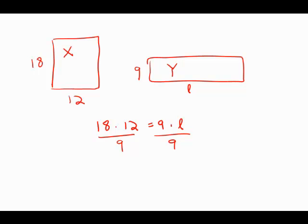I notice when I divide by 9 on the left side, I get this wonderful canceling: 18 divided by 9 is simply 2, and of course, 2 times 12 is 24.